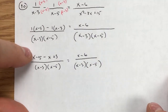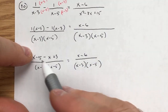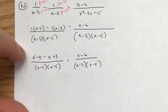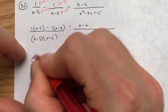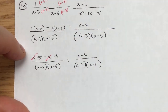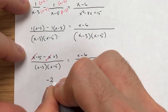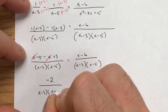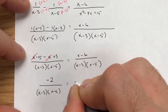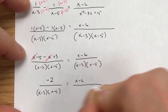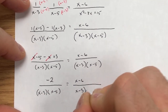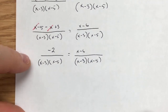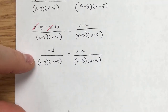Simplifying: I have x minus 5 minus x plus 3. The x's cancel out completely. Negative 5 plus 3 gives me -2. So the combined left side is just -2 over (x - 3)(x - 5). Simplifying like this makes the math easier to work with going forward.